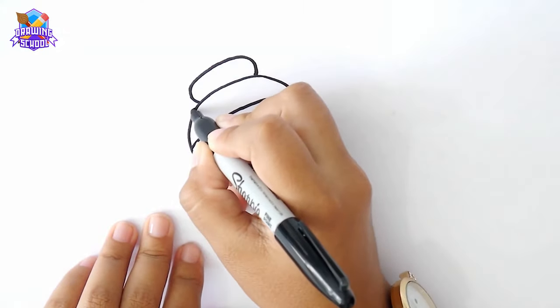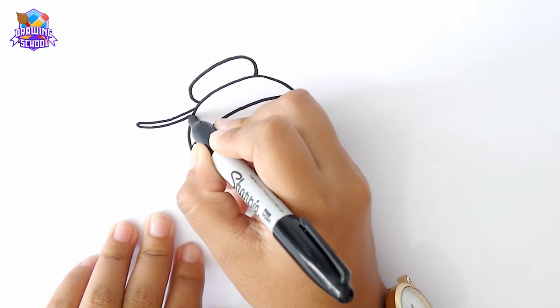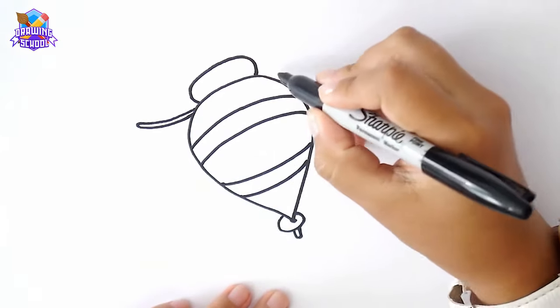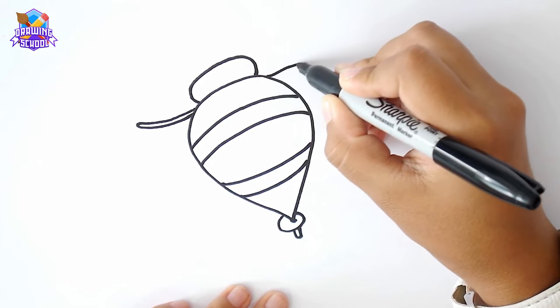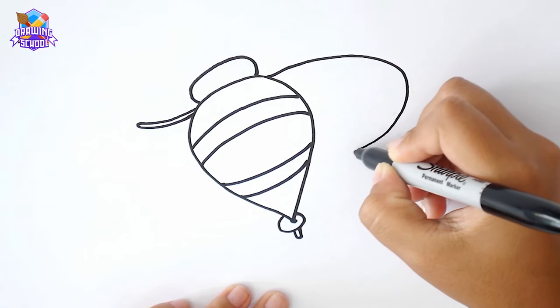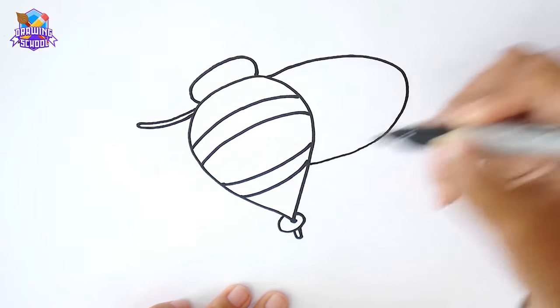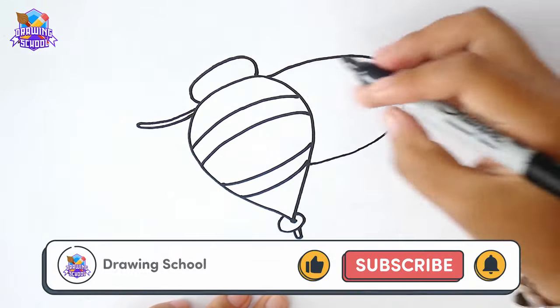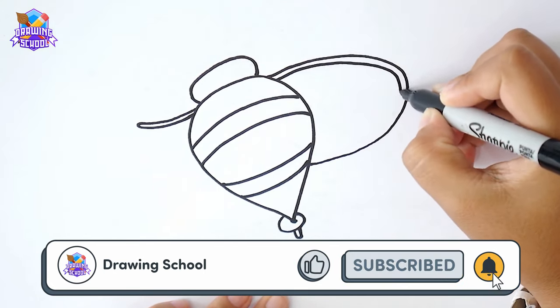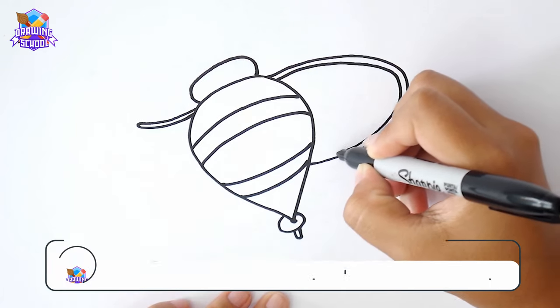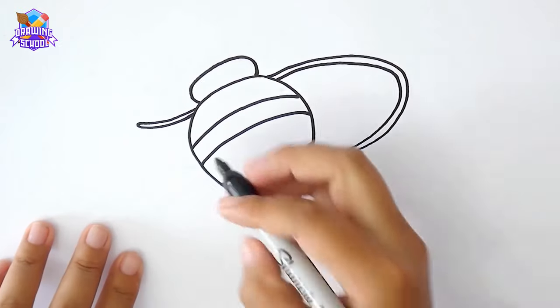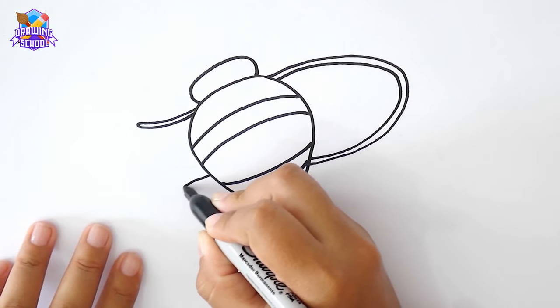Now we're going to draw a curved line to make the thread of this top. And we're going to continue it on the other side, like this. We follow this.